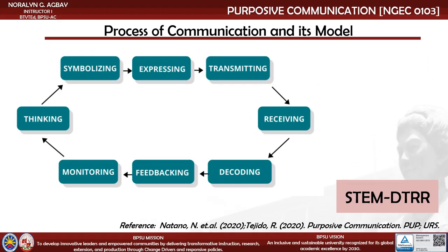Eugene White's model recognizes feedback as a part of the communication process. He described the process as sequential and cyclical, following eight stages of oral communication. These stages are: thinking, symbolizing, expressing, transmitting, receiving, decoding, feedbacking, and monitoring.